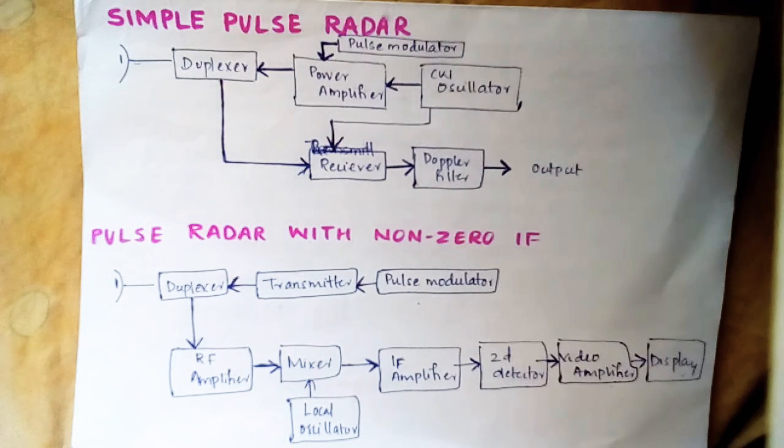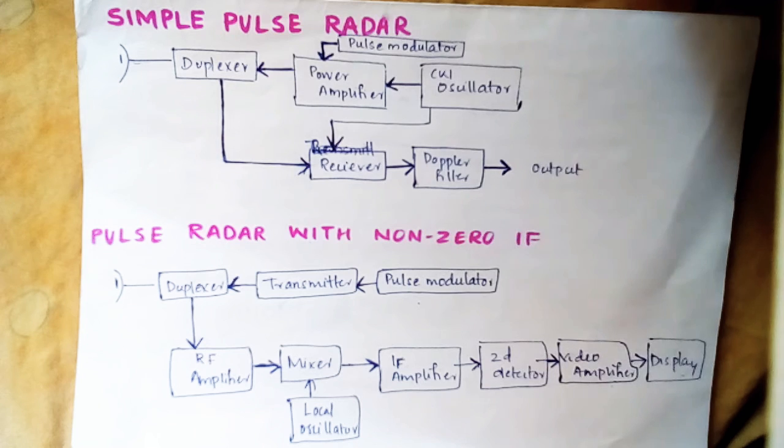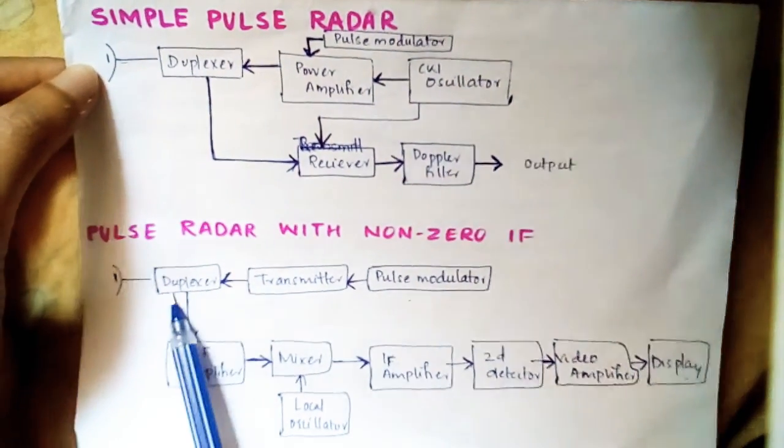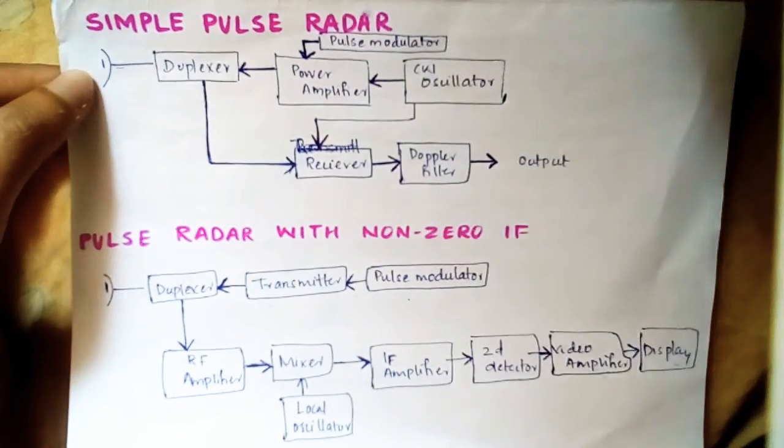Hi everyone, today I'm going to talk about pulse radar system - how to study the pulse radar block diagram quickly. First of all, you must remember there is a single antenna and a duplexer, and here we use a pulse modulator. We have two block diagrams here: one is simple pulse radar and another is with IF.